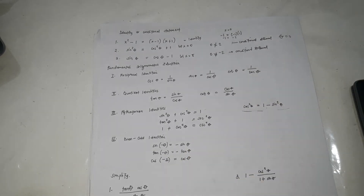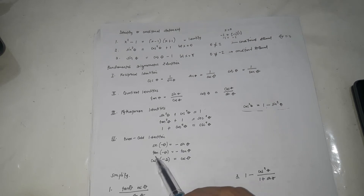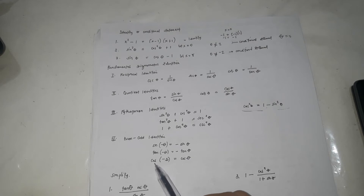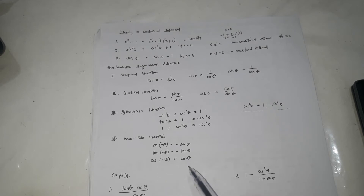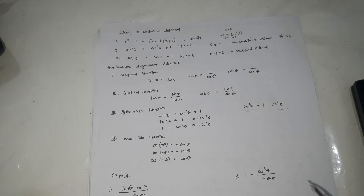For even and odd identities: sine of negative theta equals negative sine theta; tangent of negative theta equals negative tangent theta. However, for cosine, cosine of negative theta equals cosine theta — it's different because cosine of a negative angle equals cosine of the positive angle.